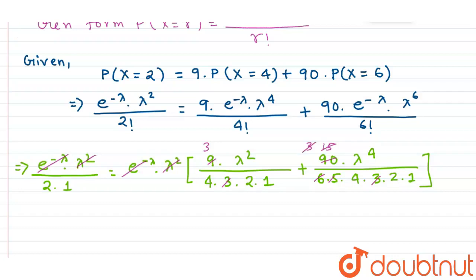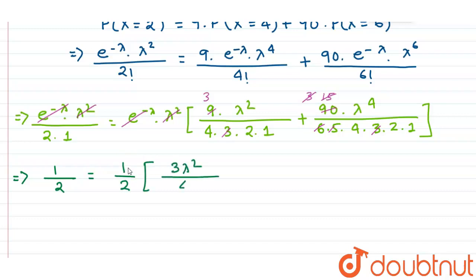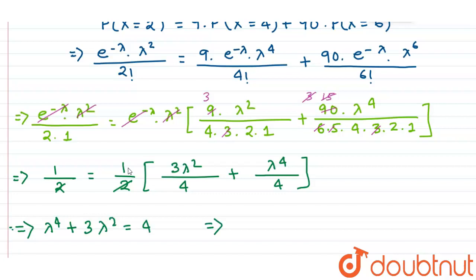Taking 2 as common, we get 1/2 = 3·λ²/4 + λ⁴/4. Canceling the 2 from both sides, this simplifies to the equation: λ⁴ + 3λ² − 4 = 0. This is equation number 1.